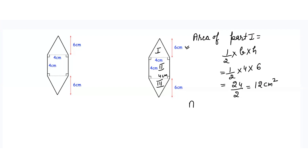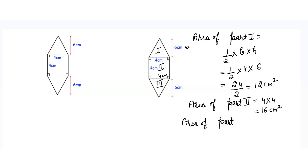Then area of part 2 — since it's a square, the area is always equals to side into side, that means 4 into 4 which is equal to 16 centimeter square. And the area of part 3 will also be equals to the area of part 1 because the dimensions are the same: the base is 4 centimeters and height is 6 centimeters, so we get the same area of 12 centimeter square.